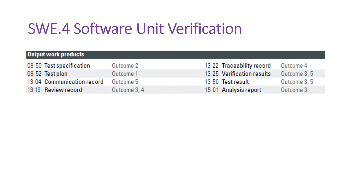The output work products are: test specification, test plan, communication record, review record, traceability record, verification results, and test result analysis report. We have a unit test strategy, test specification, and test plan. After testing, we publish the results including code review results and static verification results.